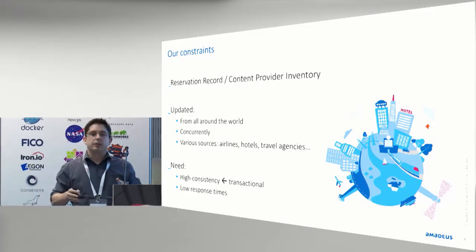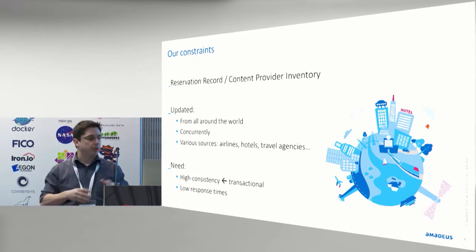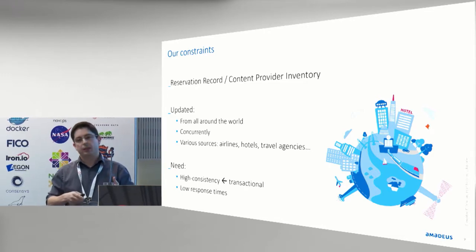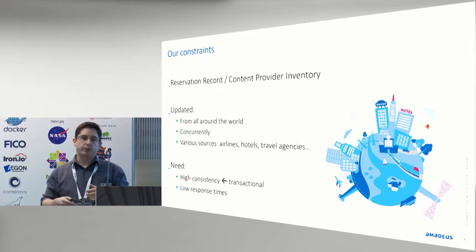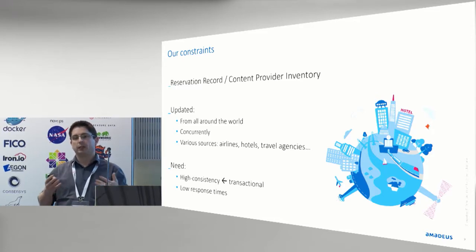We have a couple of constraints in terms of the types of data objects we handle. We have reservation records — you may have heard of the PNR, the passenger name record, also called structured booking records. I already mentioned inventories: airline inventories, rail inventories. These are objects we need to handle in a consistent manner — we don't want double bookings in a hotel. So we need fairly high consistency, transactional mechanisms, and low response times.